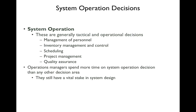System operation decisions tend to be tactical and operational. They include management of people — scheduling when people come and go, how many are needed, hiring and firing. Inventory management and control — how much lettuce, tomatoes, what's on hand, what was thrown away. Scheduling of people and hours and product development timelines. Project management when trying something new. Quality assurance to ensure whatever you're providing meets quality standards. Operations managers spend more time on system operation decisions than any other area, but still have a vital stake in system design.